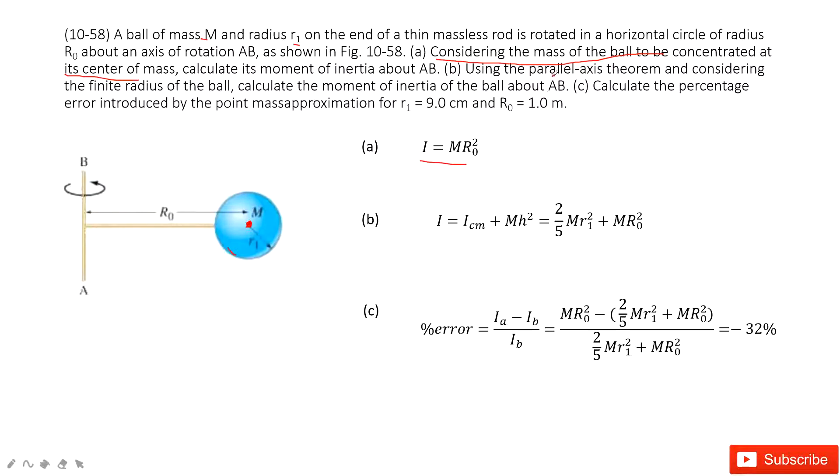In the second part, we use the parallel axis theorem to consider the finite radius of the ball and calculate the moment of inertia. In this case,